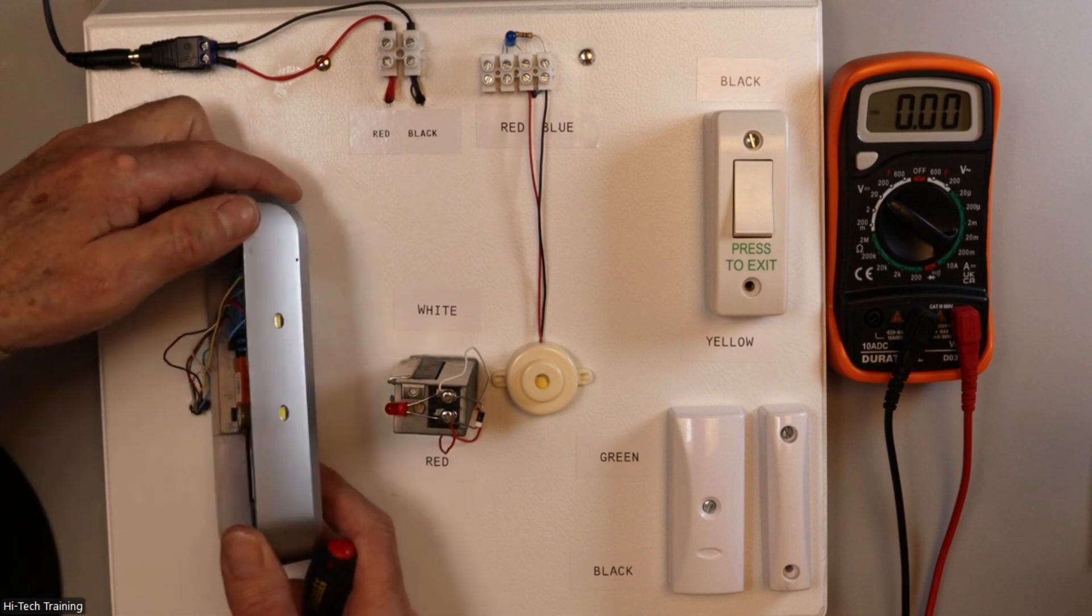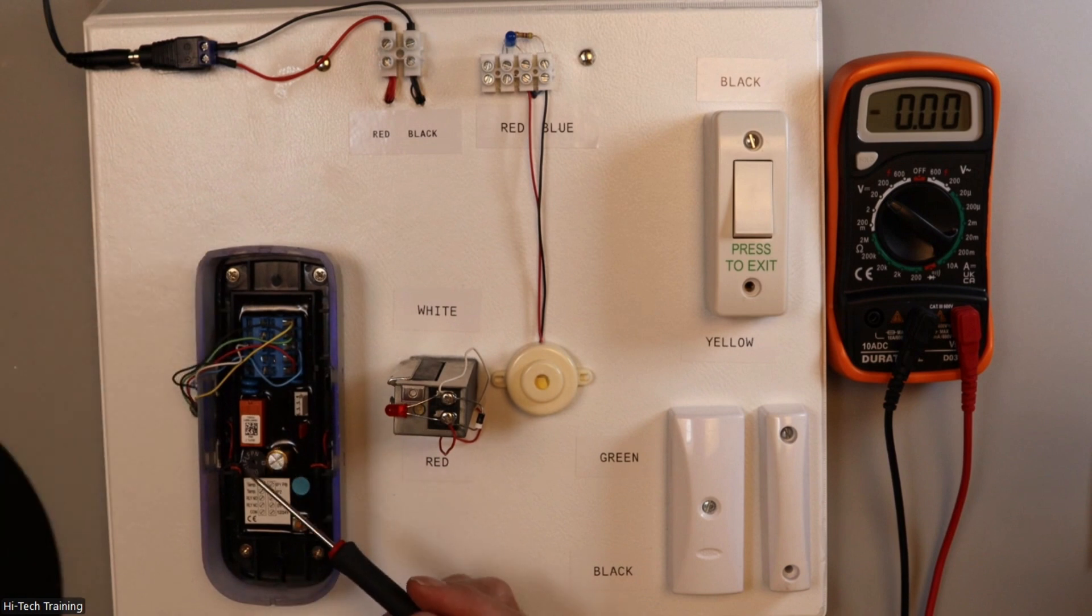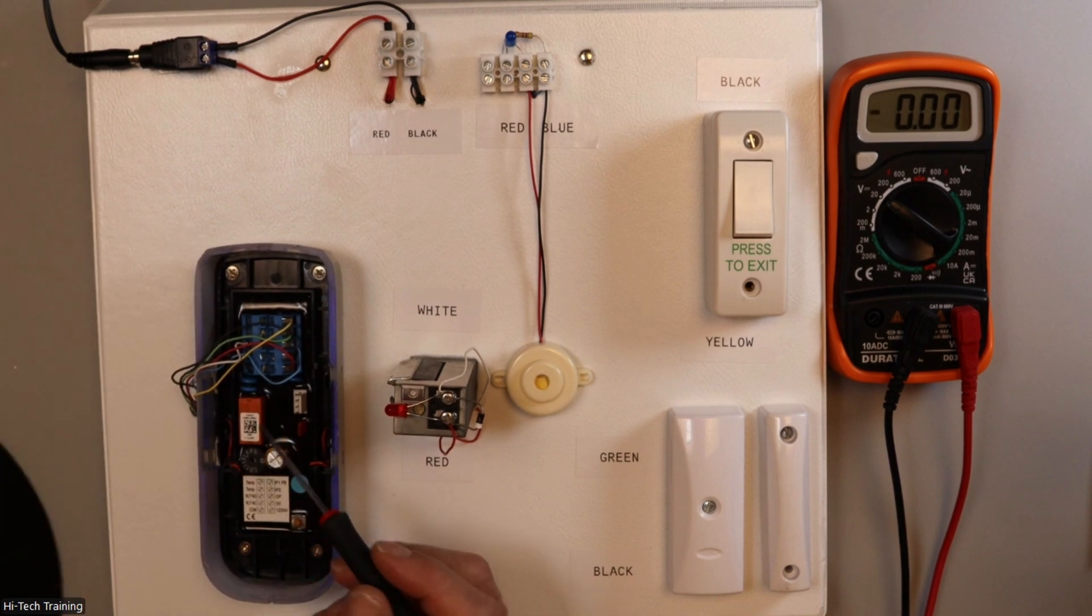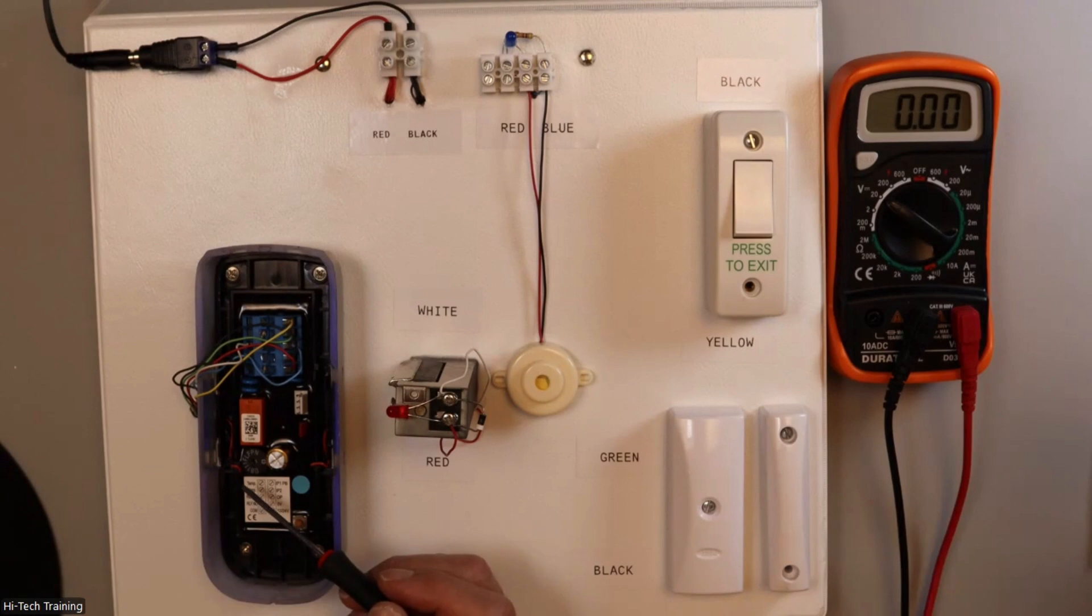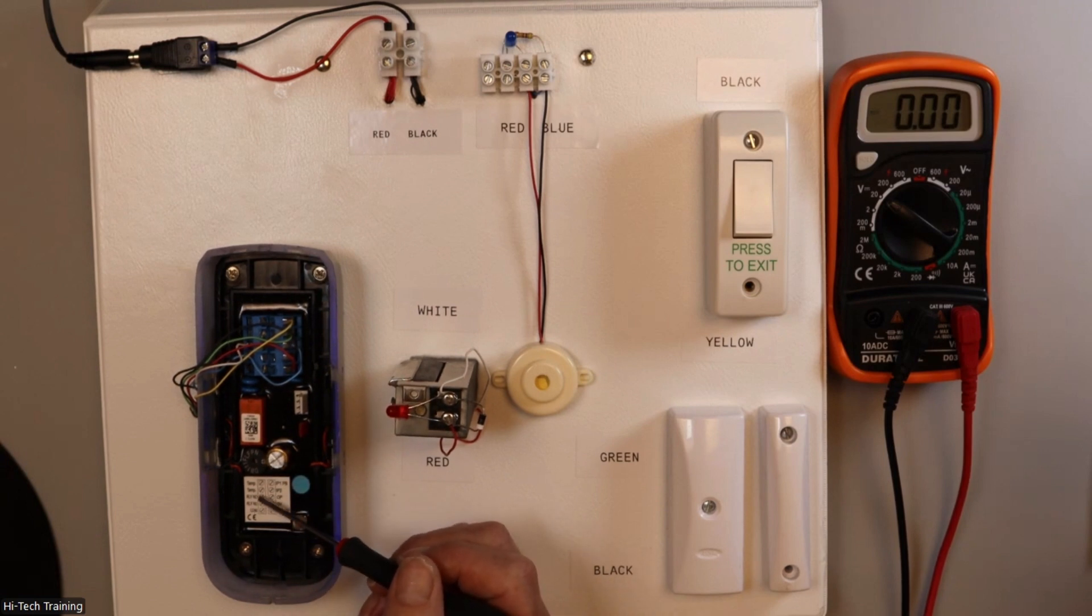On the back of the controller here, we have various color wires put on to different connections. The controller itself, these are the connections into it here. Inside there's a relay, buzzer, capacitor, and the connections are indicated here.